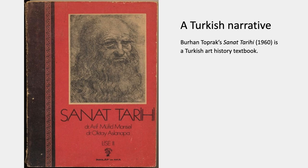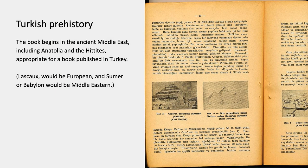Second, a Turkish world art history. This is Burhan Toprak's book called Sanat Tarihi — History of Art — a Turkish art history textbook from 1960. It begins in the ancient Middle East, includes Anatolia in present-day Turkey and the Hittites, which is appropriate for a book published in Turkey. It starts with ancient Middle Eastern art in the region of Turkey, including the Egyptian pyramids.